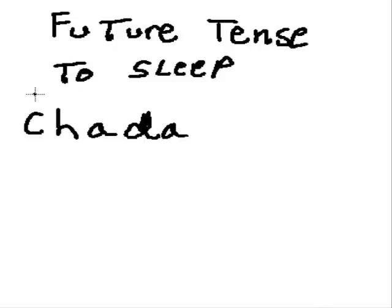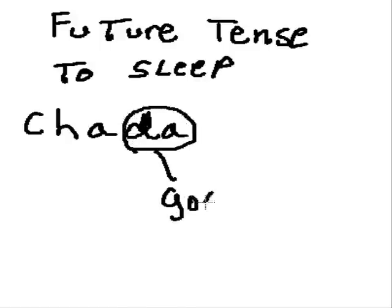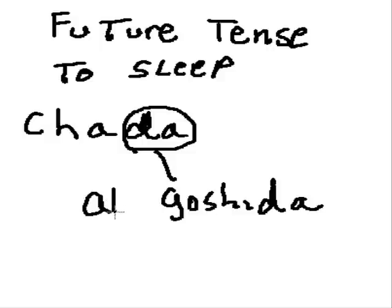The next one is to sleep, and that word is chada. I look at the end and see that da, which is going to become goshida. I see an a there, and that becomes an al. Drop down the ch, and chada — to sleep — becomes will sleep: chalgoshida.